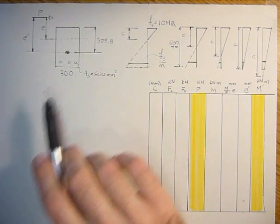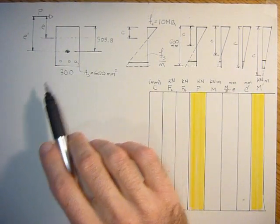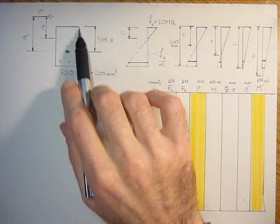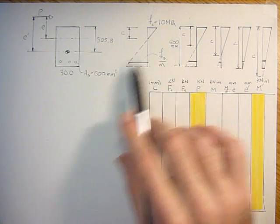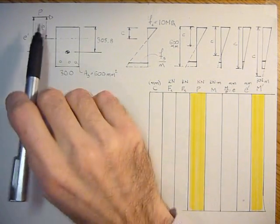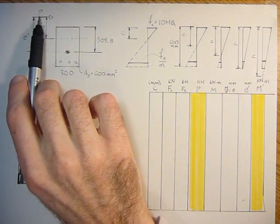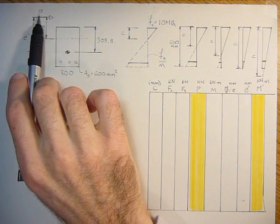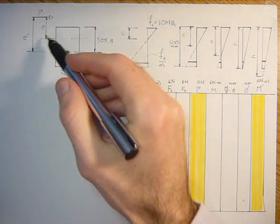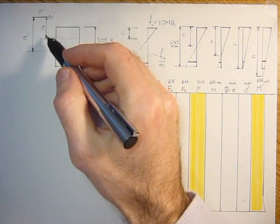Today we have the same reinforced concrete section for tutorial 2. It's 300 wide and 600 high and has an area of steel of 600 millimeters squared. But today we're going to add an axial load, an externally applied axial load P to the section at some eccentricity relative to the neutral axis E.